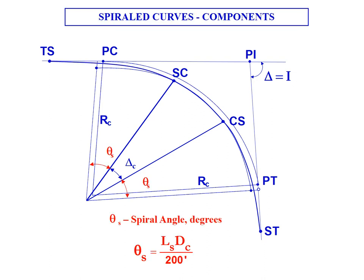We also have theta sub s which is the spiral angle. Again typically those are equal to each other and theta sub s equals the length of spiral L sub s multiplied by the degree of curvature over 200 feet.